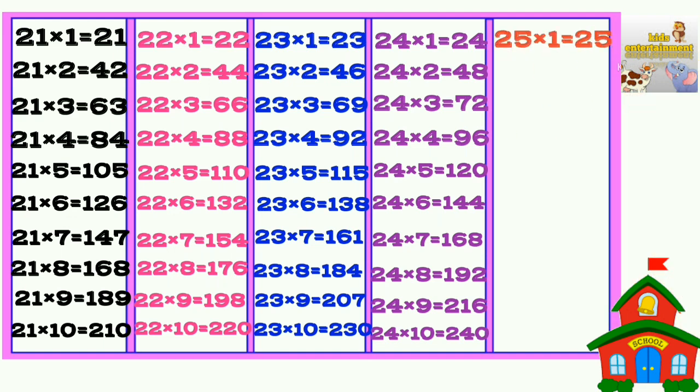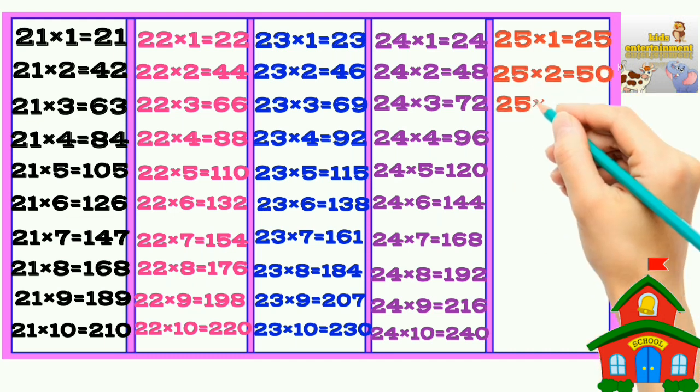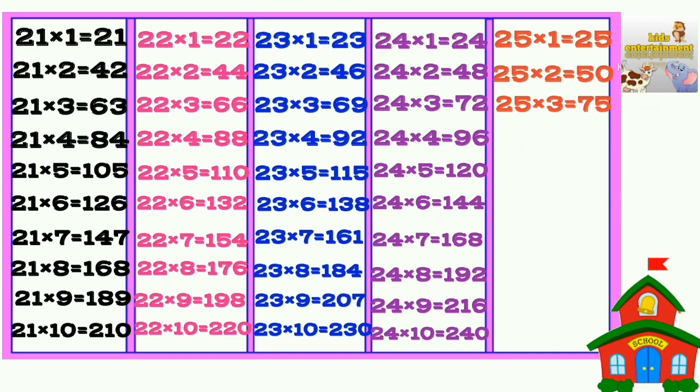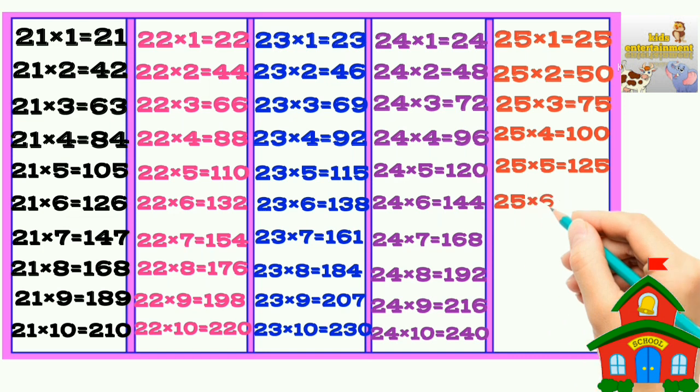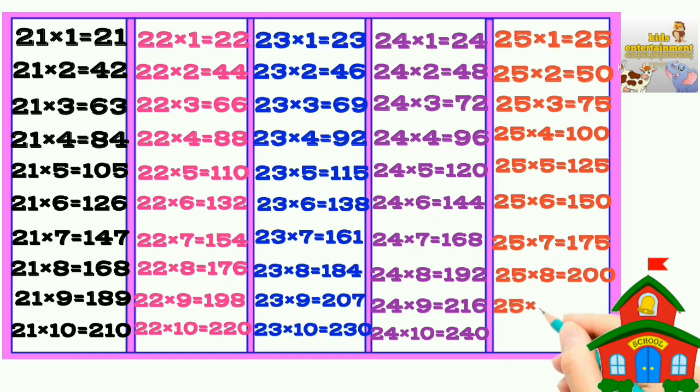25 times 1 is 25, 25 times 2 is 50, 25 times 3 is 75, 25 times 4 is 100, 25 times 5 is 125, 25 times 6 is 150, 25 times 7 is 175, 25 times 8 is 200, 25 times 9 is 225, 25 times 10 is 250.